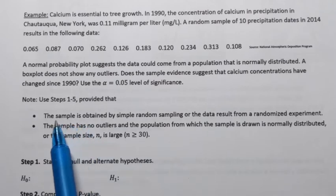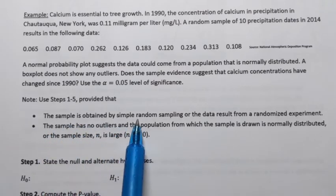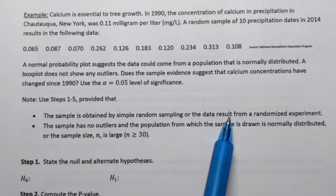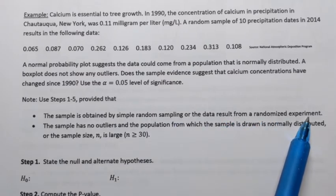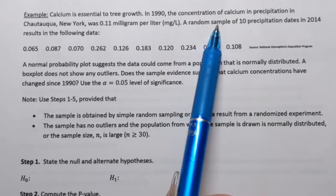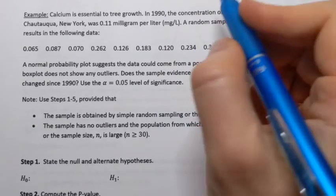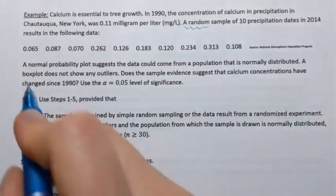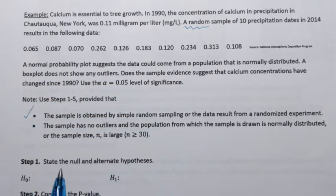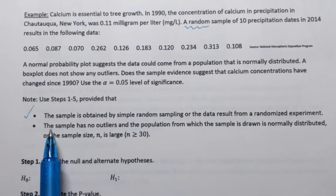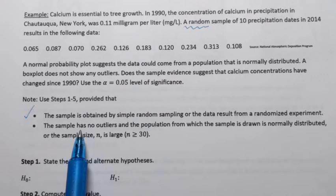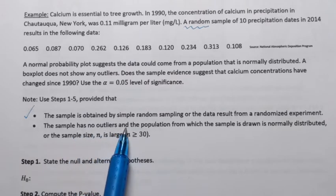To conduct hypothesis testing for population mean, first we have to verify the following conditions. The sample has to be obtained by simple random sampling or the data result from a randomized experiment. Here it says that the random sample of 10 dates, so we know that this first condition is satisfied.